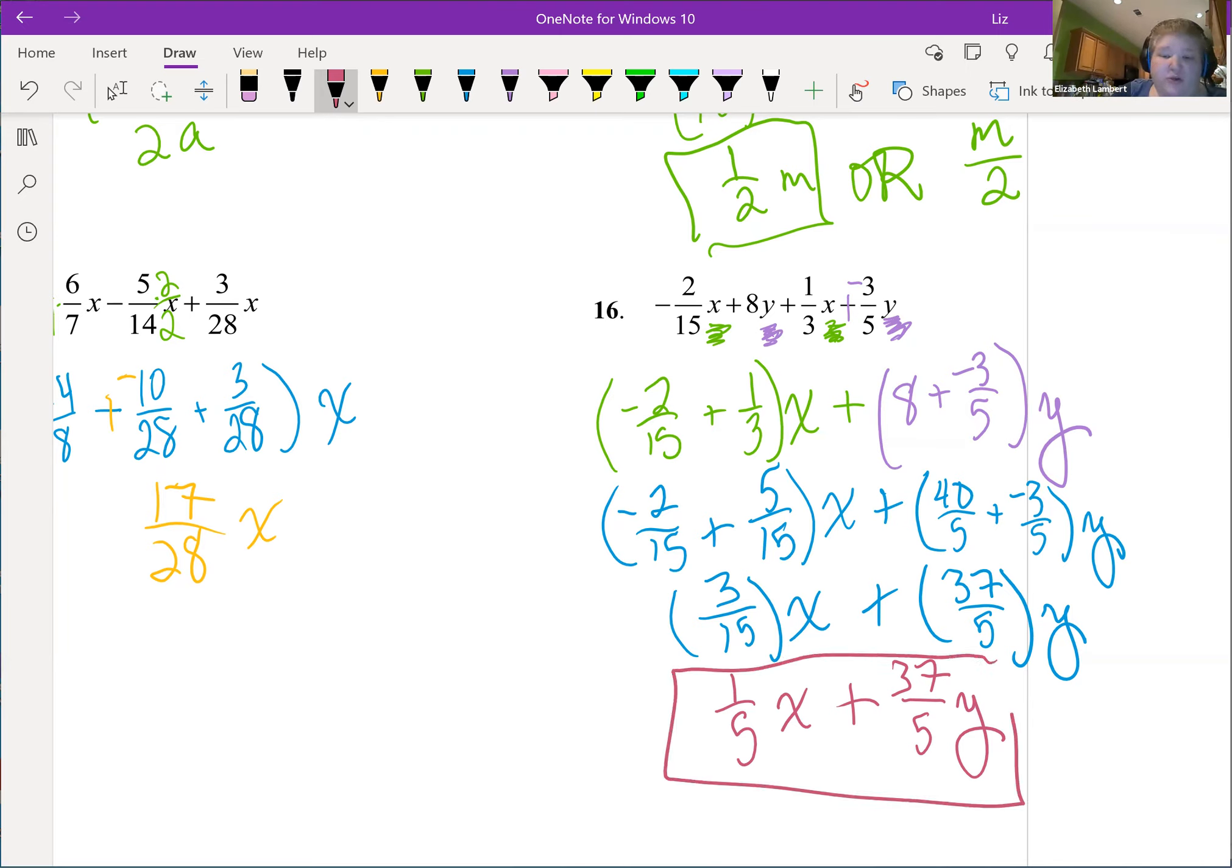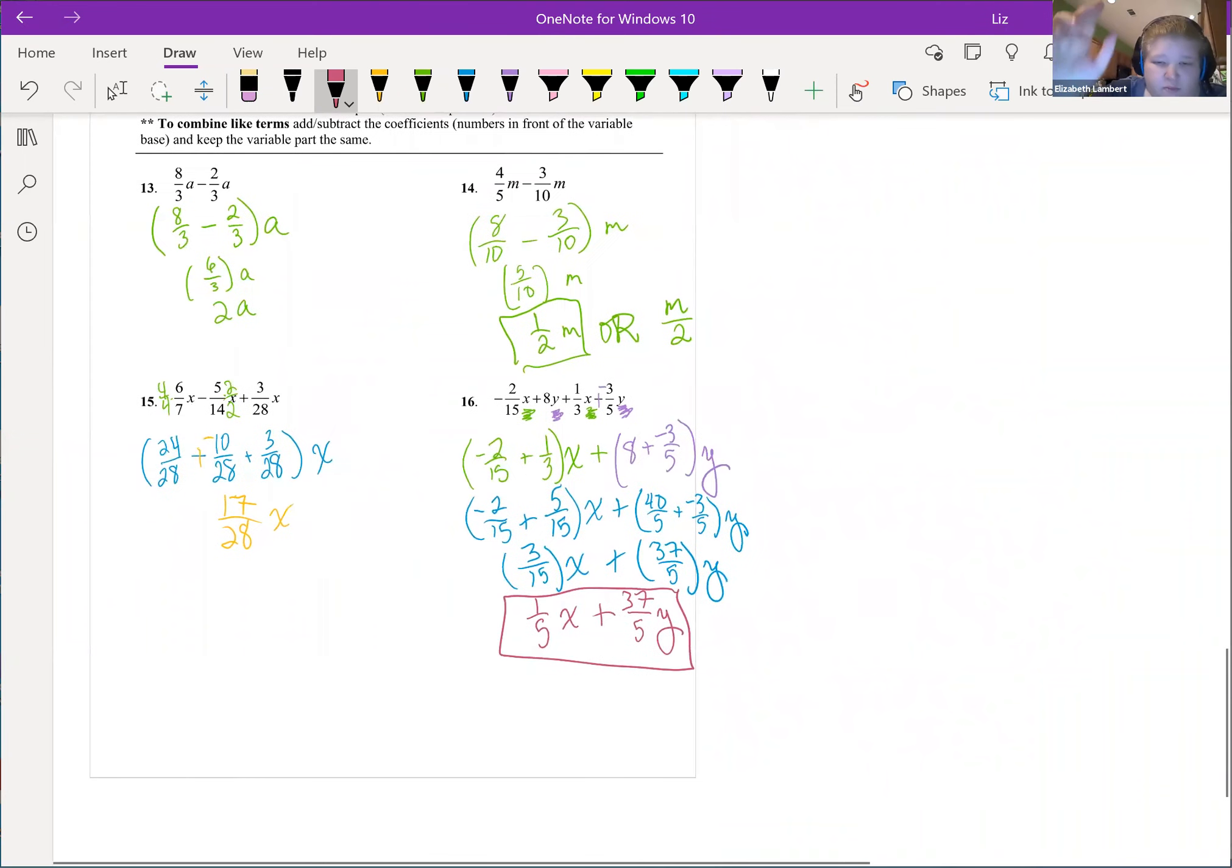So that is all you can do. I cannot combine x's and y's because I don't know what x is or y is. You know, x could be zero and y could be a million, or x could be five and y could be negative two. No way to know how they're going to add because I don't know positive, negative, small, big, whatever they are.